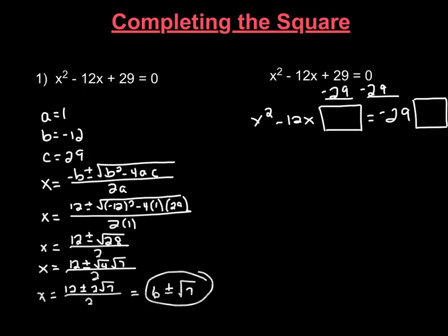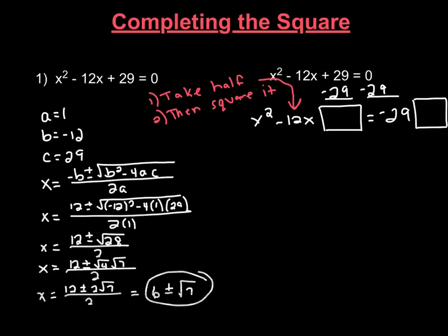Now what we want to do is we want to put a number in this box, and in order to determine what number to put in this box, look at the term before it. You're going to look at the number in front of the x, and what we're going to do is we're going to take half of that number and then square it. So if we take half of negative 12, that gives us negative 6, and negative 6 squared is positive 36.